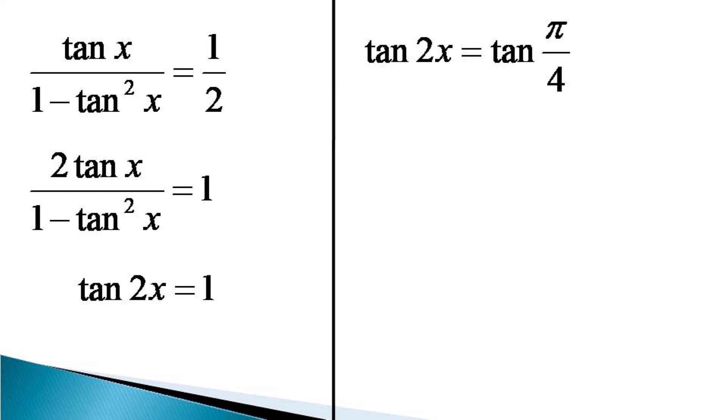The general solution of this trigonometric equation is given as 2x equals nπ plus π by 4, where n can be any positive or negative integer or 0. Now dividing both sides by 2, we get the value of x as equal to n by 2 into π plus π by 8.